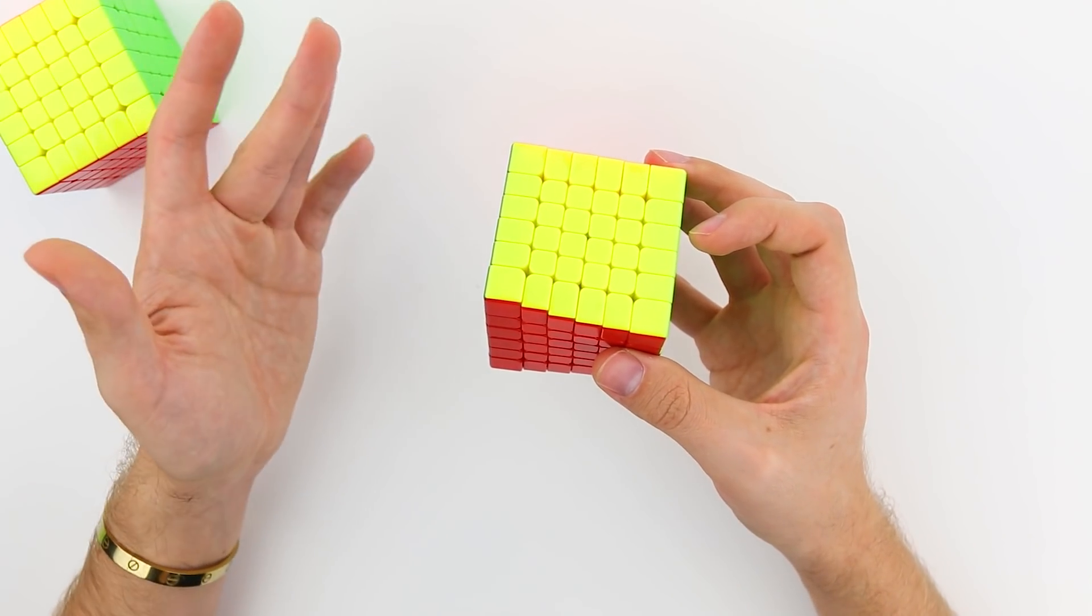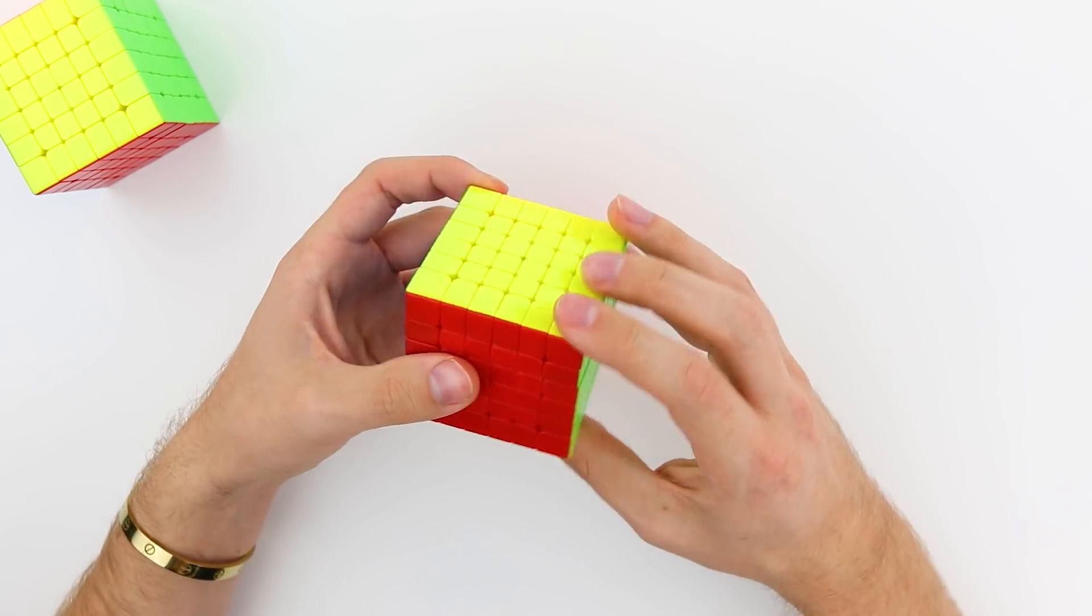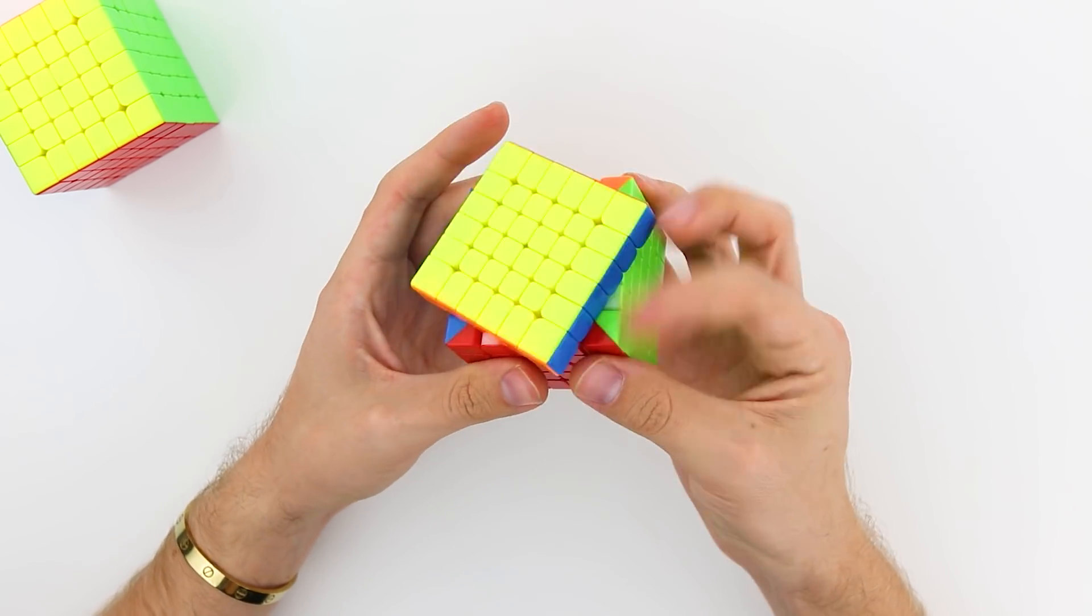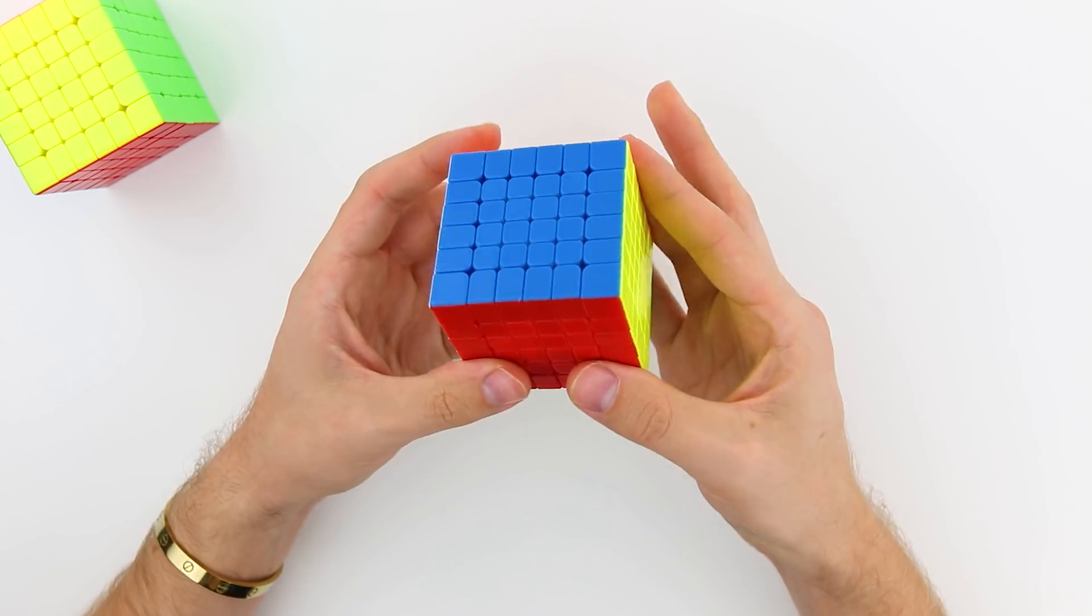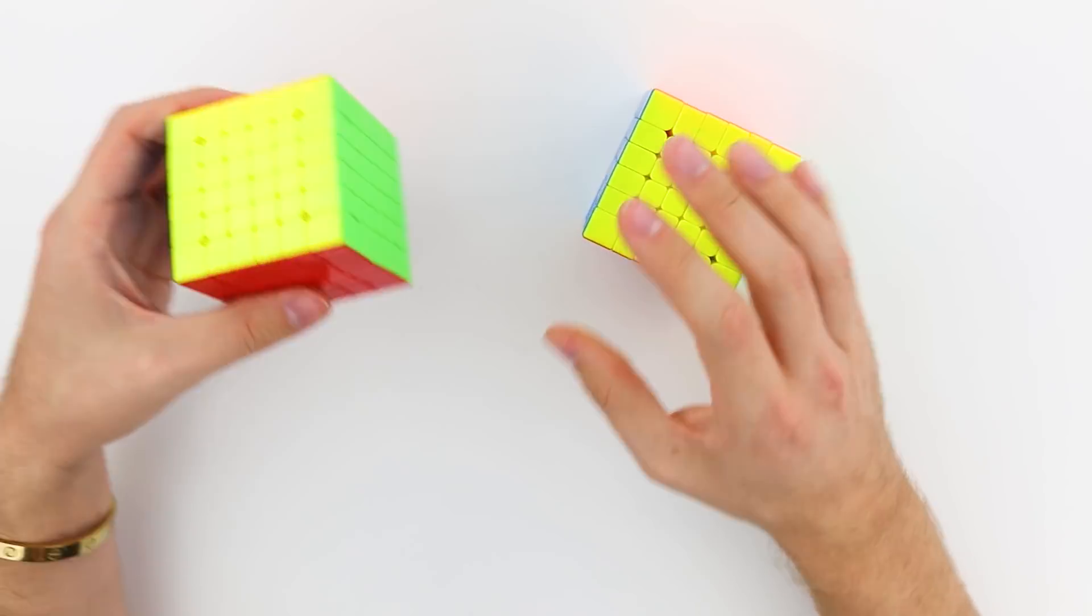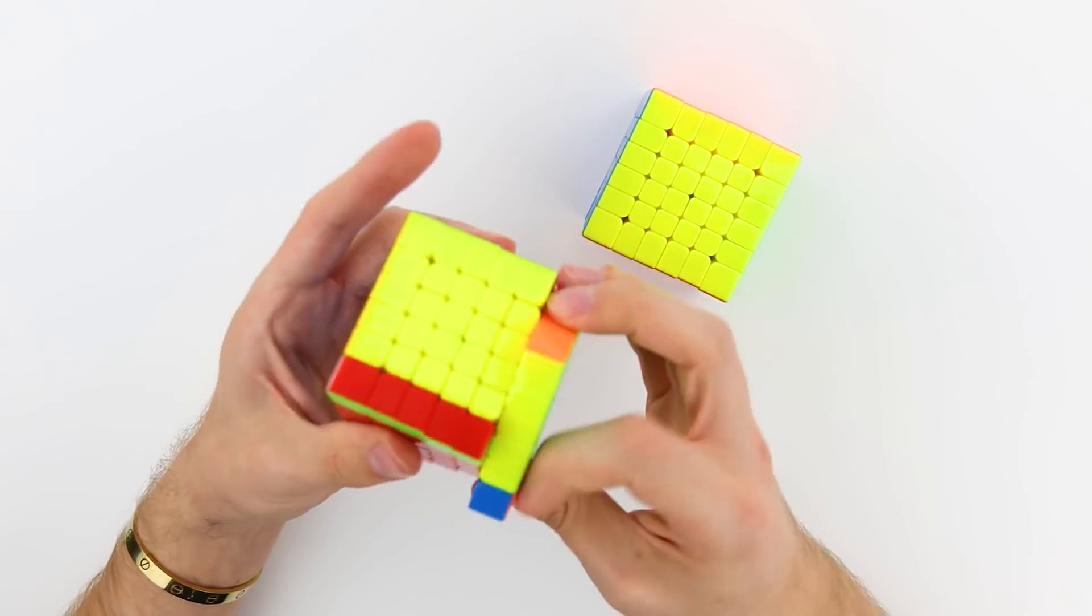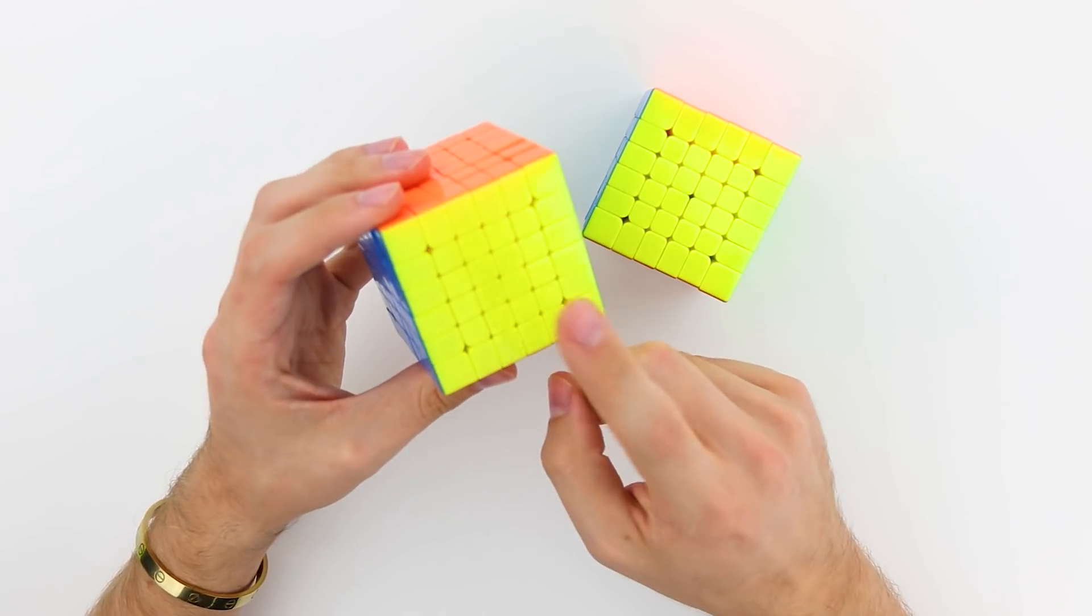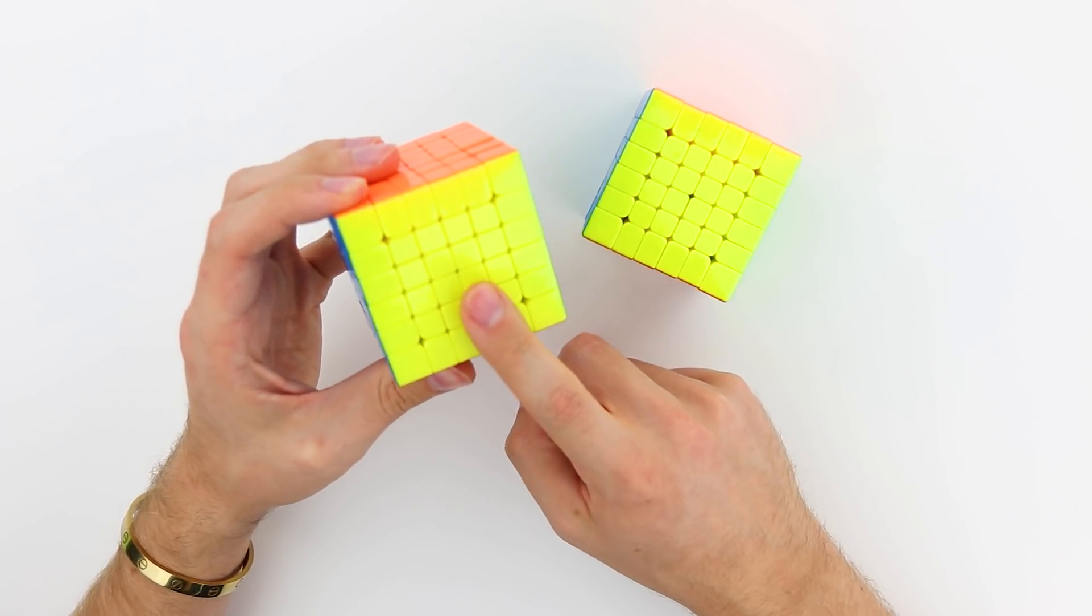Comparing the version 2 to the version 1, I immediately like the feel of the version 2 a lot more. It's way smoother and more buttery. Overall, it's a lot easier to turn, whereas the version 1 takes a lot more force to move. I think this one actually has a little bit of lubricant in it as well too, just for reference.